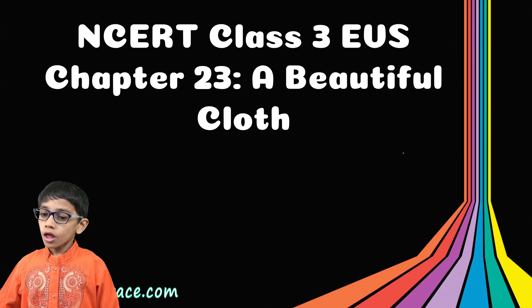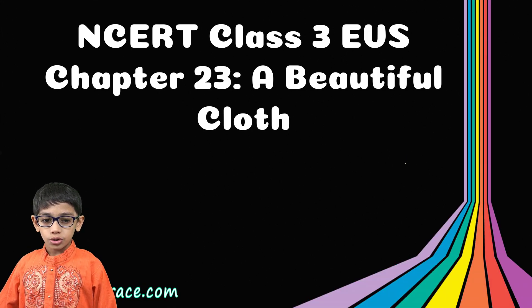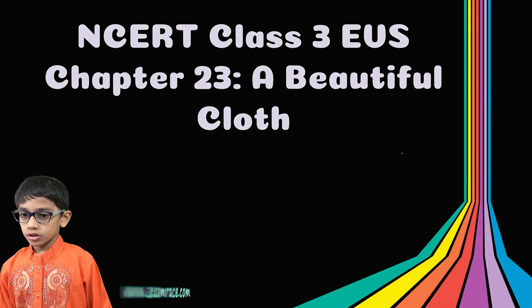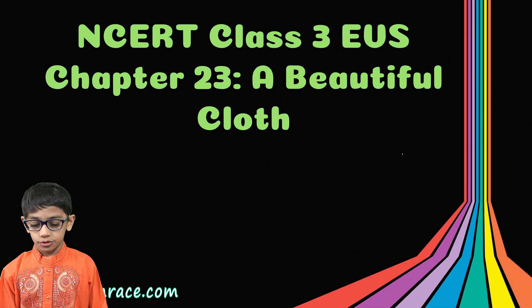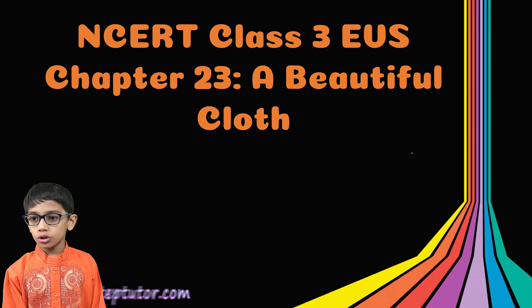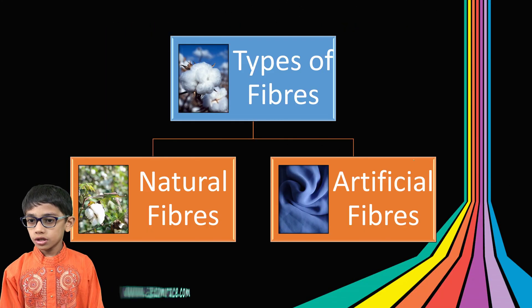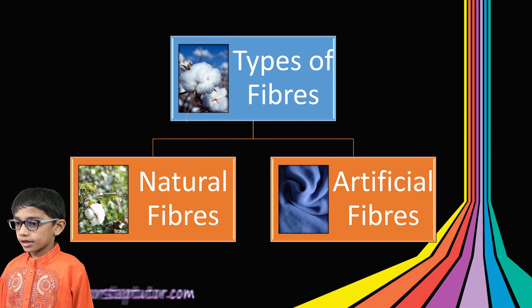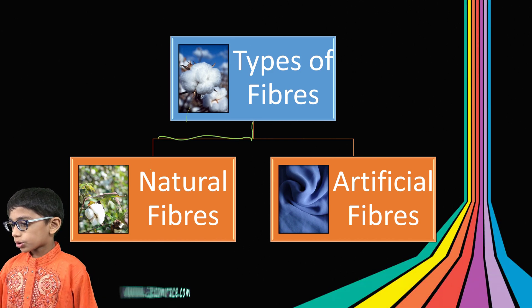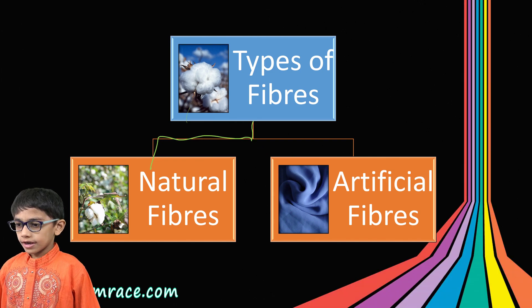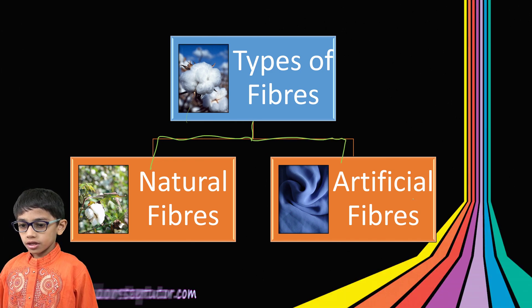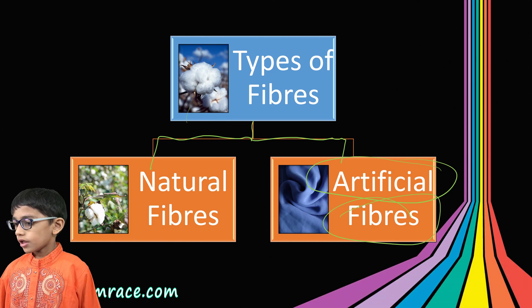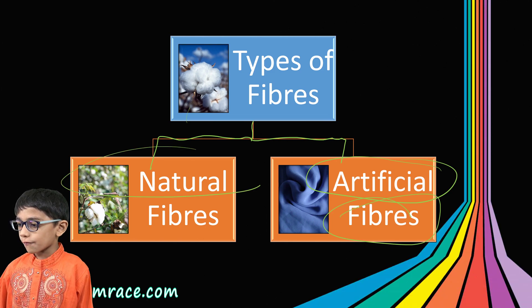There are so many different types of clothes. Do you know how they are made? Today we will learn about clothes. We can categorize clothes into two different categories: artificial fibers and natural fibers.